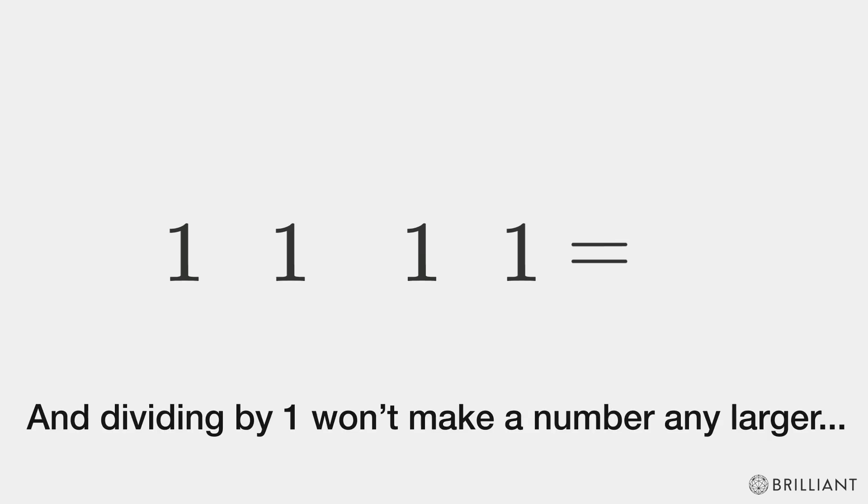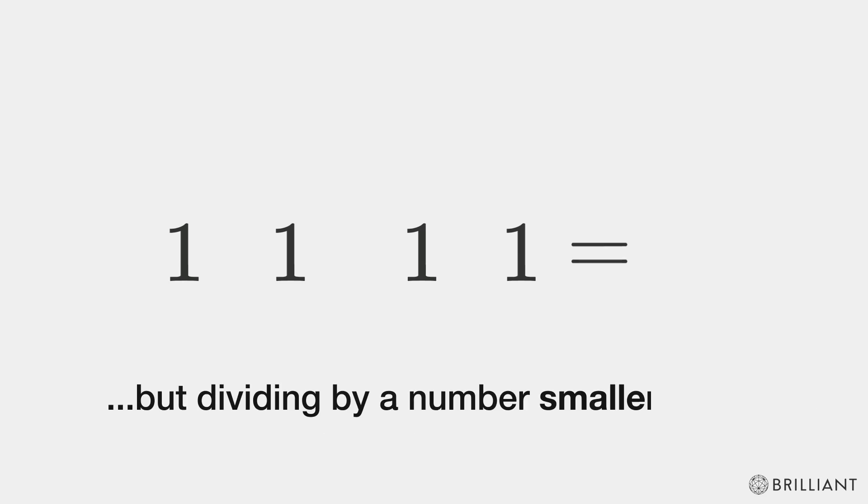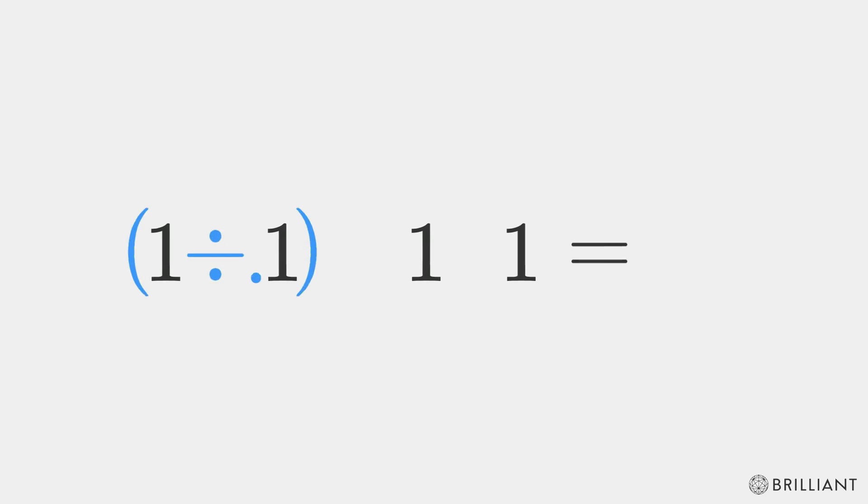And dividing by one won't make a number any larger. But dividing by a number smaller than one might get us somewhere. 1 divided by 0.1 is 10, divided by 2 is 5.